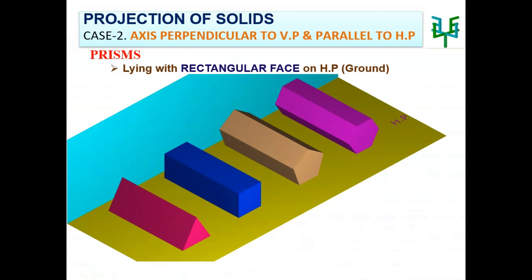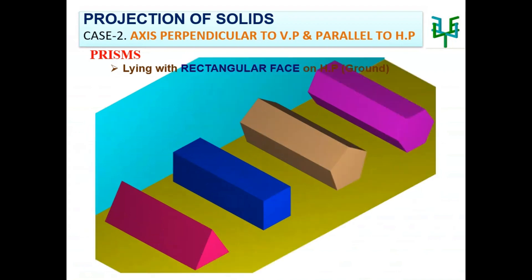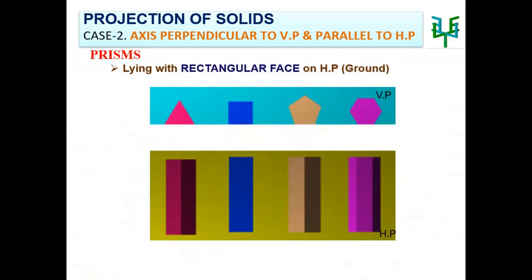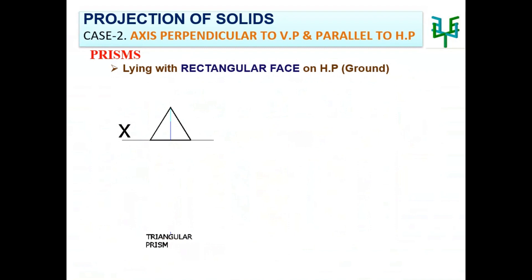When a solid is resting with its axis perpendicular to VP and parallel to HP, the base shape of the solid is visible in the elevation. Prisms may lay on the ground with its rectangular face. Since the base shape is seen in the elevation, that should be drawn first. Then by drawing projectors, the plan can be drawn. While drawing elevation, one edge of the base should be on the XY line.